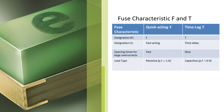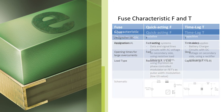Time-lag fuses interrupt slower than quick-acting fuses. They are more robust to survive high inrush current peaks and are often used for capacitive load types with such inrush current peaks. Typical applications are power supplies, battery chargers, and primary circuits with rectifier and capacitors.